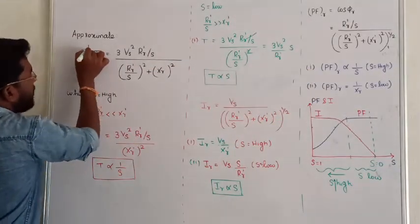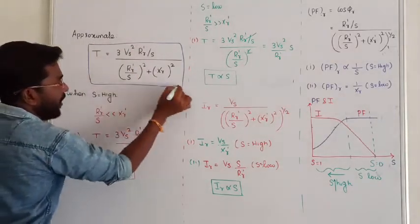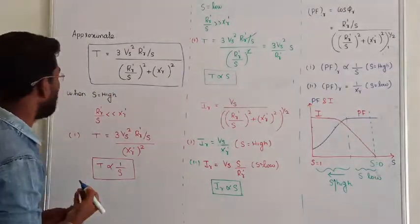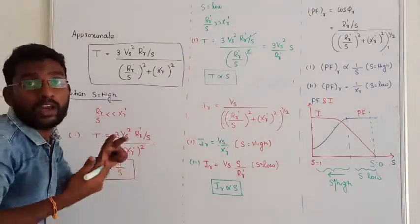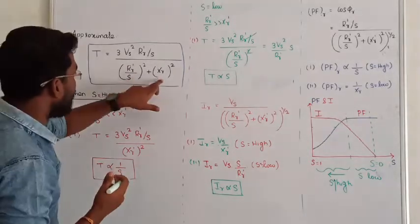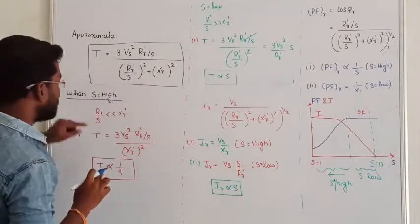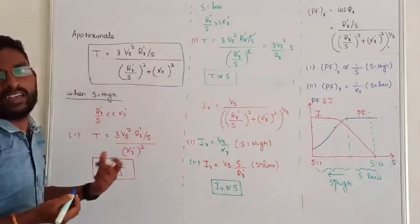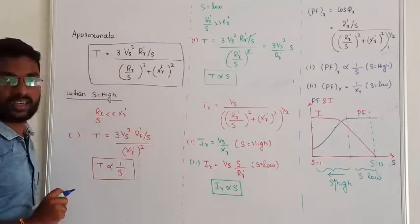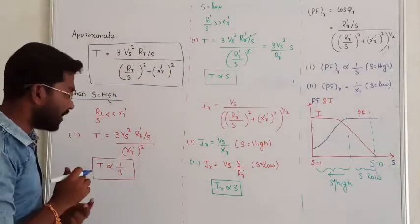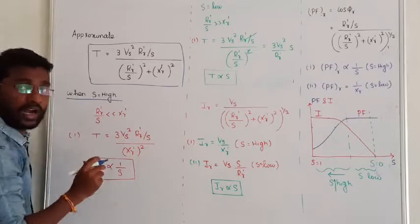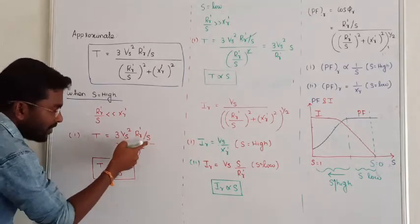Case number 1: This is called the approximate torque equation after neglecting the effect of stator losses and stator drops. When the value of slip is very high, the denominator term RR' by S becomes less. In that case, rotor reactance will become greater than the value of rotor resistance. We are considering the effect of reactance alone. In such a case, rotor resistance, reactance, and supply voltage are all fixed. So we can say torque is inversely proportional to slip.